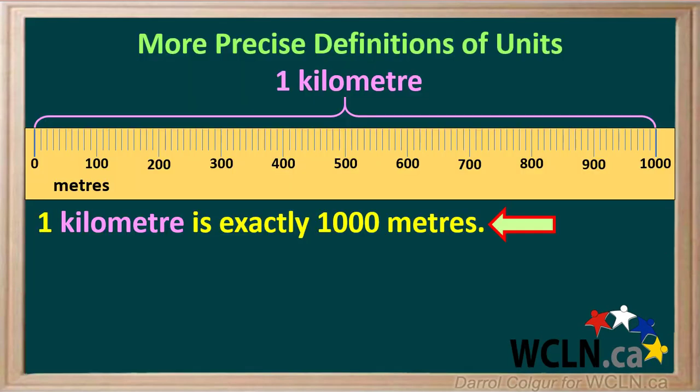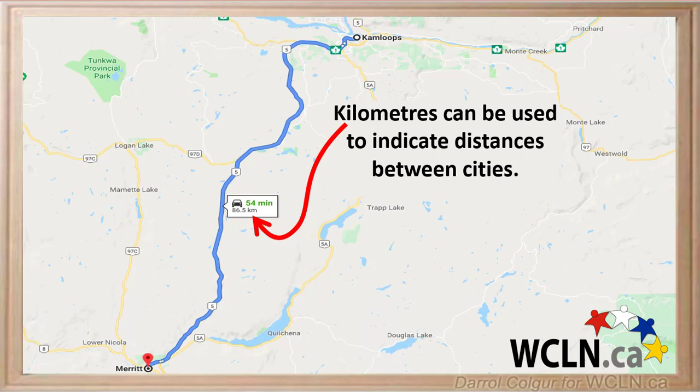A kilometer is exactly 1,000 meters. Kilometers are commonly used to indicate distances between cities. For example, this map shows that the distance between Kamloops and Merritt is 86.5 kilometers.